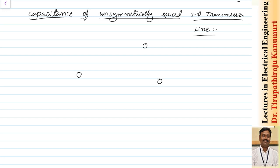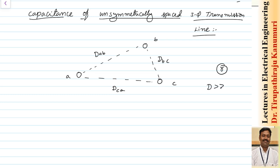Let us take three conductors A, B, and C of a transmission line. The distance between A and B is D_AB, between B and C is D_BC, and between C and A is D_CA. The radius of each conductor is R, and the distance of separation between the conductors is far greater than the radius.